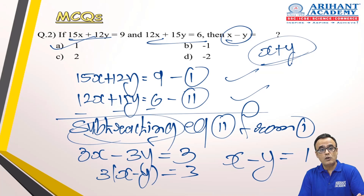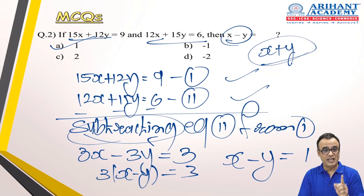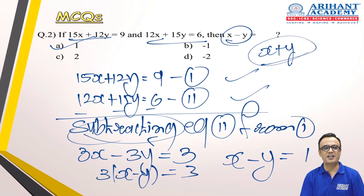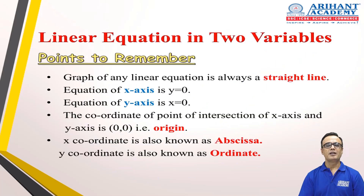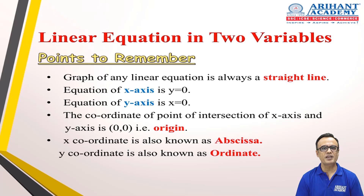The marks allocated for one question is one, and the time limit is accordingly given, so you have to be smarter in your calculations. Now let's move to the next part: linear equations in two variables — how do you represent them on a graph? The graph of any linear equation is always a straight line. The very first point I mentioned was that 'linear' means in a line.